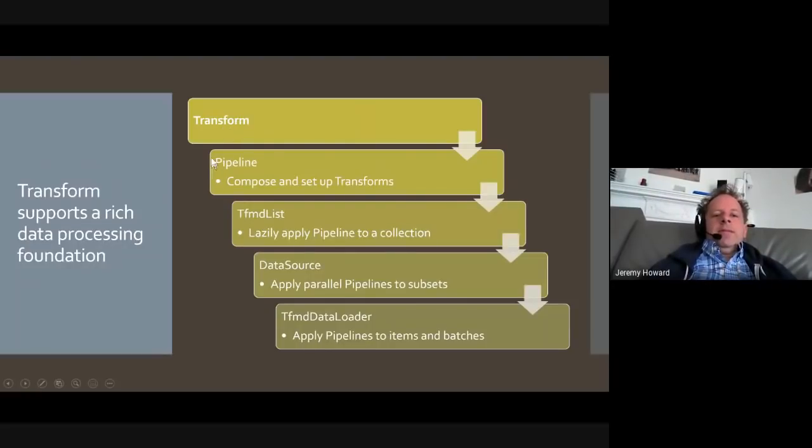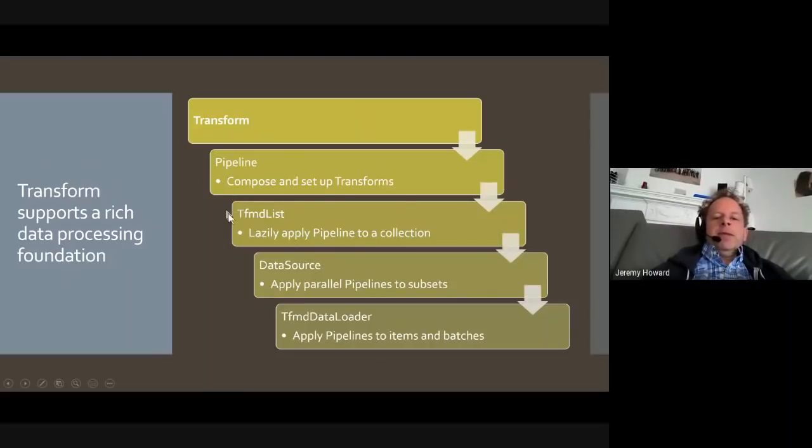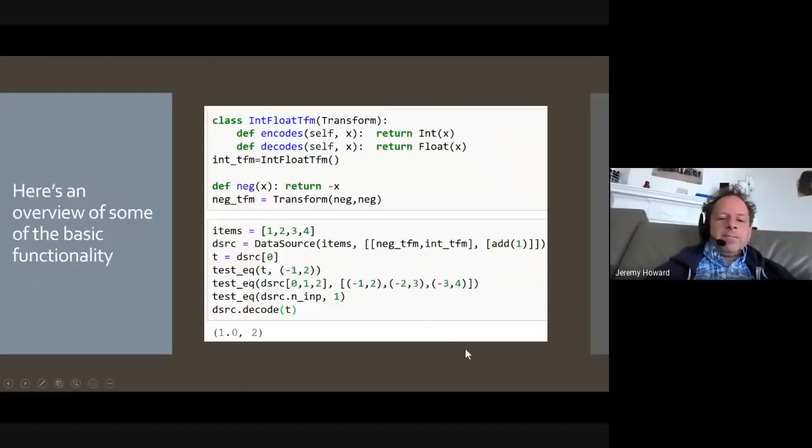So we built this bunch of stuff that builds on top of each other at the lowest level is a class called transform, which is a callable, which also has a decode, does the type retention, higher kinded type thing, and does the dispatch over tuples by default. So then a pipeline is something that does function composition over transforms. And it knows about, for example, setting up transforms and like setting up transforms in a pipeline is a bit tricky because you have to make sure that at each level of the pipeline, only the previous steps have been applied before you set up the next step. So it does little things like that. And then we have something that applies a pipeline to a collection to give you an indexable, lazily transformed collection. And then you can do those in parallel to get back an independent variable for instance. And then finally we've built a data loader, which will apply these things in parallel, and create collated batches.